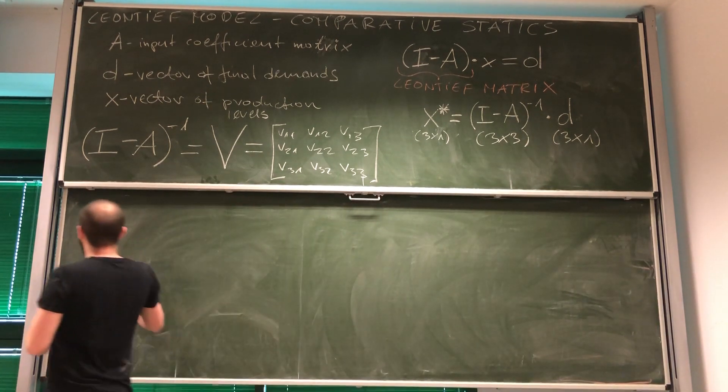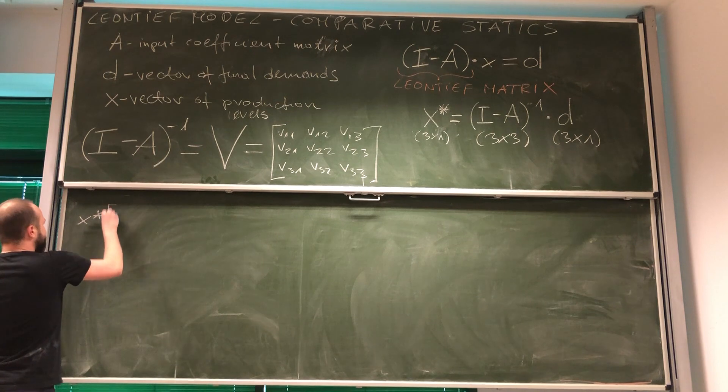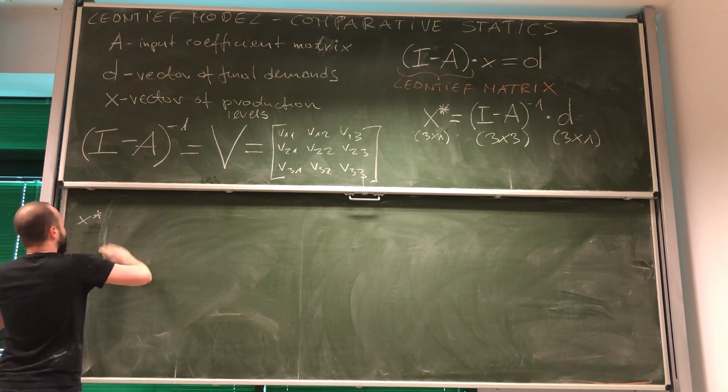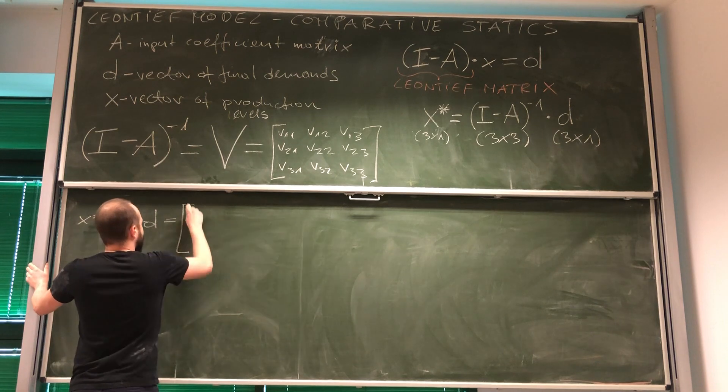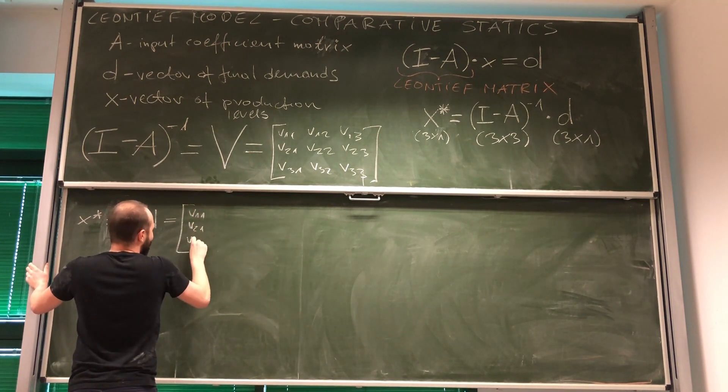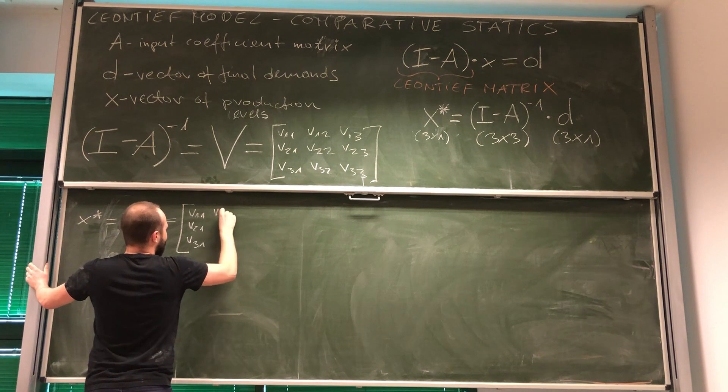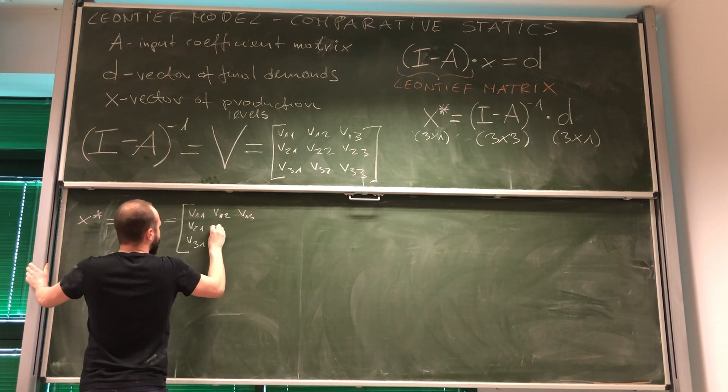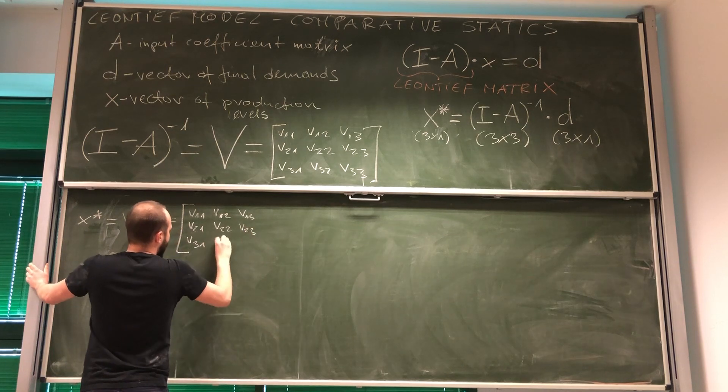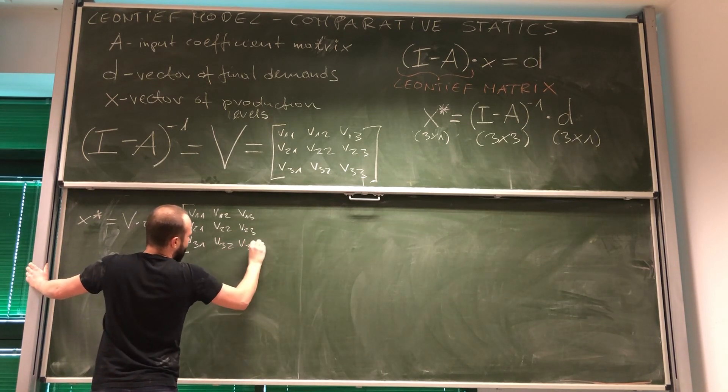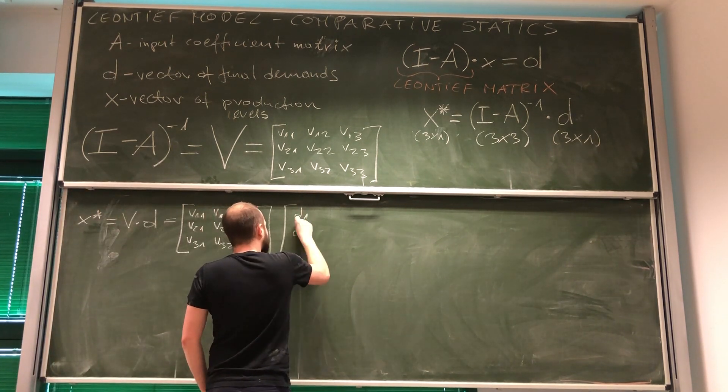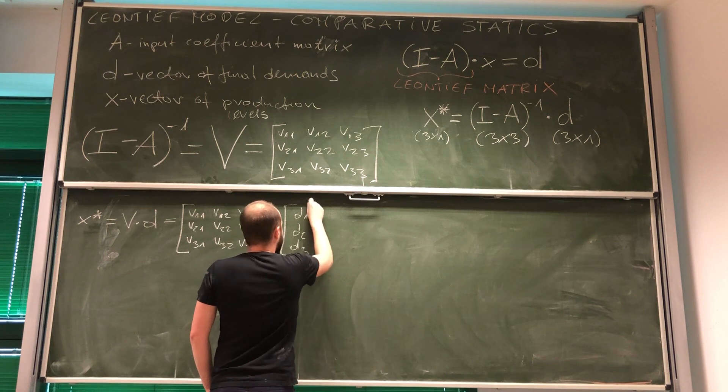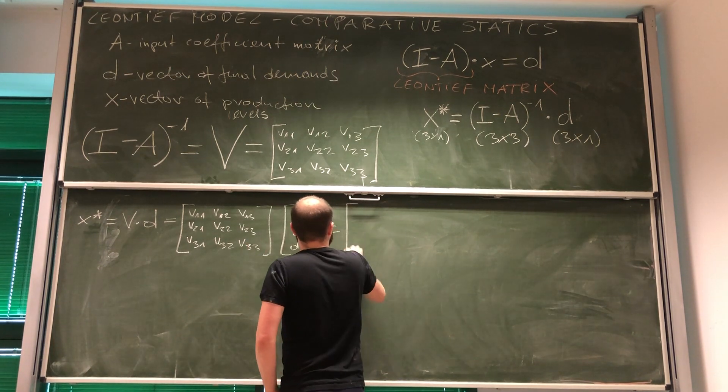The vector, so what we're going to do now is that we're going to take vector V and we multiply it by vector of final density. So, we will have V1 1, V2, V3 1, V1 2, V1 3, V2 2, V2 3, V3 2, V3 3. That is vector of final demand D1, D2, D3.